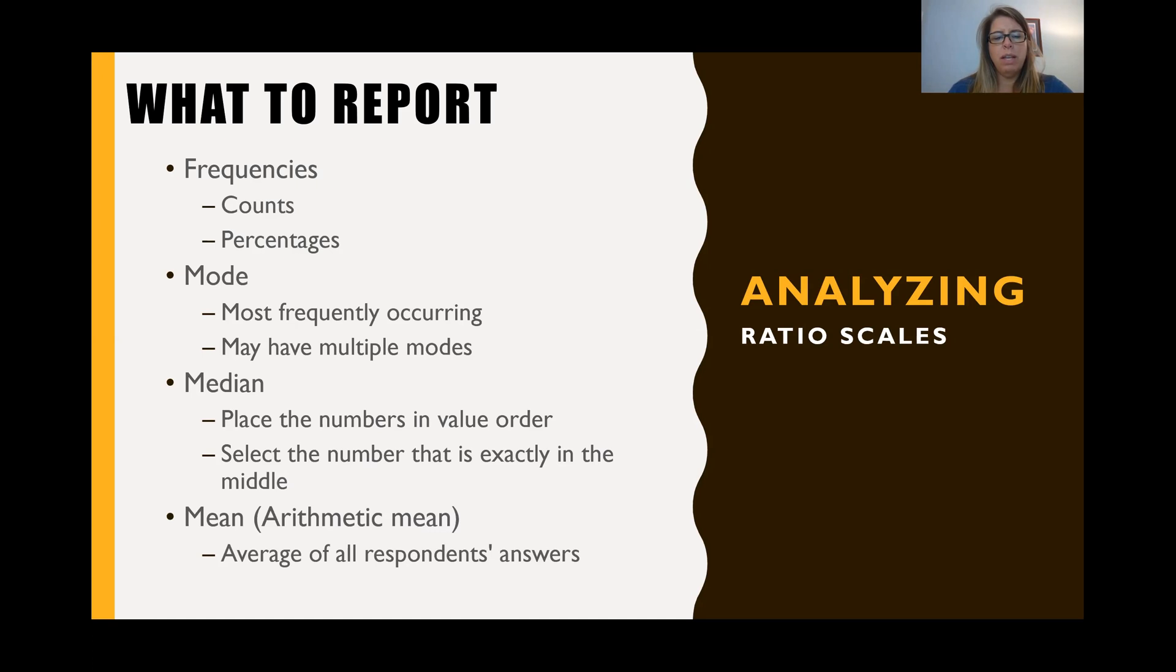Just like interval, you can report the arithmetic mean. So this is just sum up all the answers and divide it by the number of respondents and you get the average. So relatively simple, but with ratio scales, you can do two other things. You can do the geometric and harmonic means, which you cannot do with interval or ordinal or nominal variables. So this is unique.